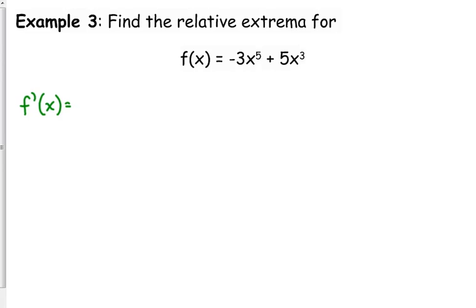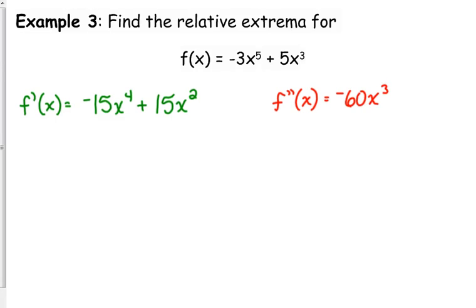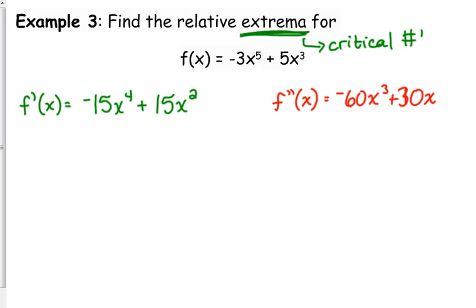The first derivative is negative 15x to the fourth plus 15x squared. I'm going to go ahead and take the second derivative while I'm at it: 15 times 4 is 60, and 15 times 2 is 30. Relative extrema occur at critical points — that's where the derivative equals 0.